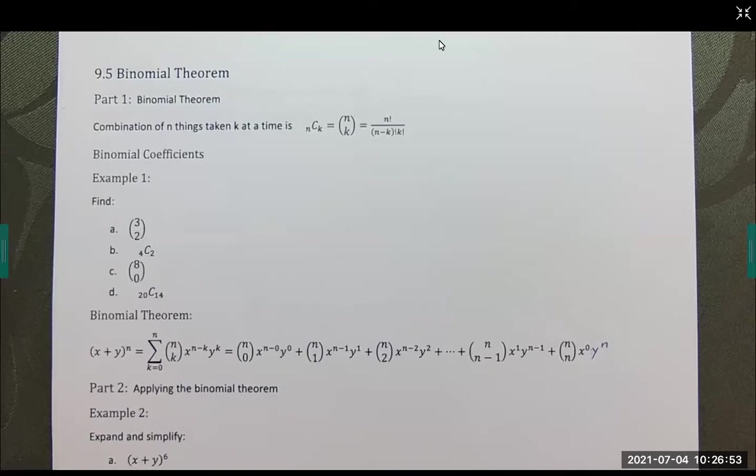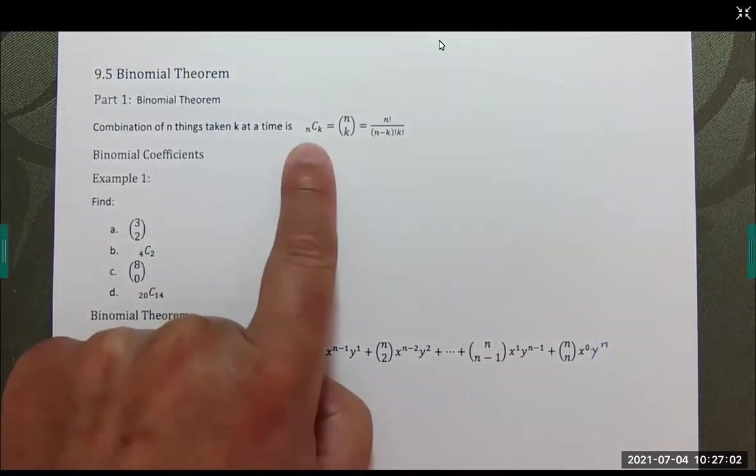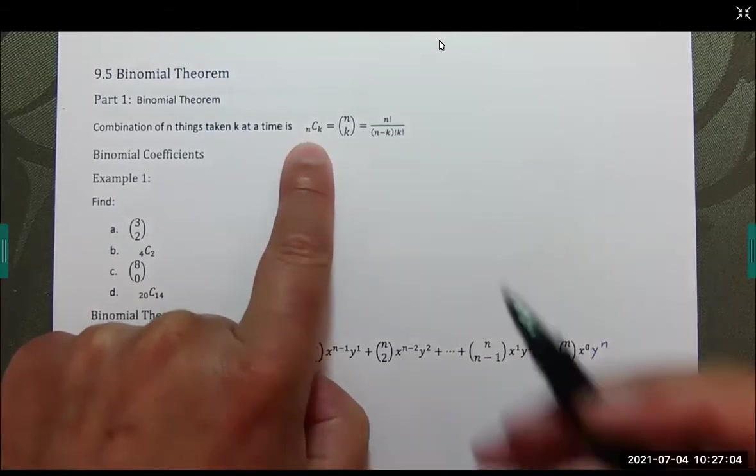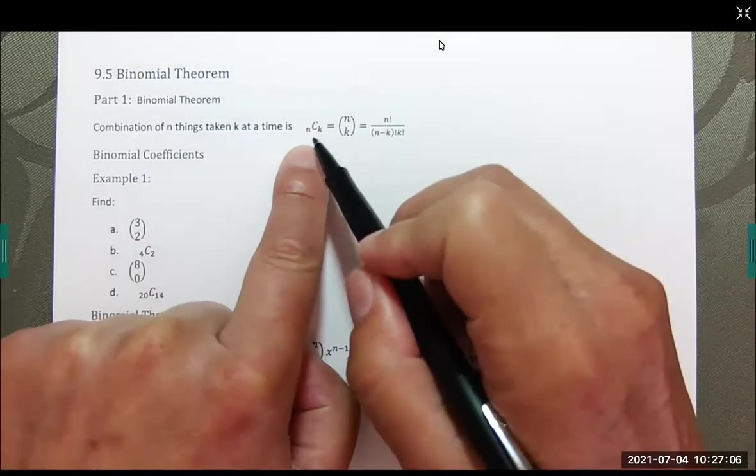We are to the binomial theorem. This is a big deal. And even though it's down here, we need a skill before we get there. And that is finding something called a combination.